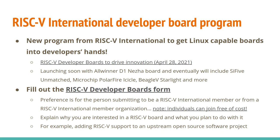One exciting announcement recently is that RISC-V International is starting a developer board program. You'll be able to sign up and potentially get a Linux-capable dev board to work on your development projects. This is starting off with the Allwinner D1 board, and eventually will include other vendors' boards like the SiFive Unmatched, the Icicle, the BeagleV, and others as they come out. Individuals can join RISC-V International free of cost at riscv.org. When filling out the form, you need to explain what project you want to work on and why you're interested in RISC-V — for example, adding RISC-V support to a certain upstream open source project.